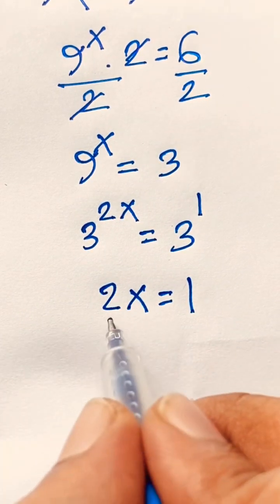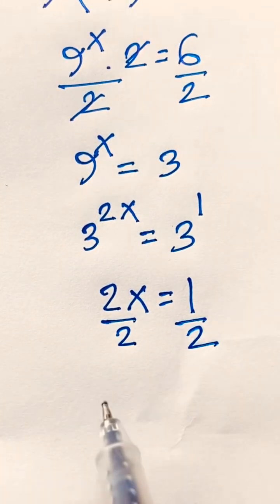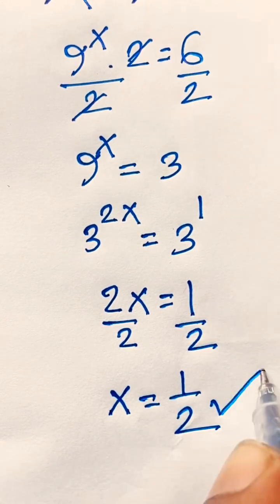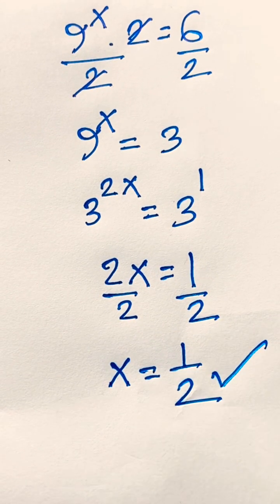If I divide both sides by 2, we find x equals 1 over 2. This is the value of x in this exponential math problem.